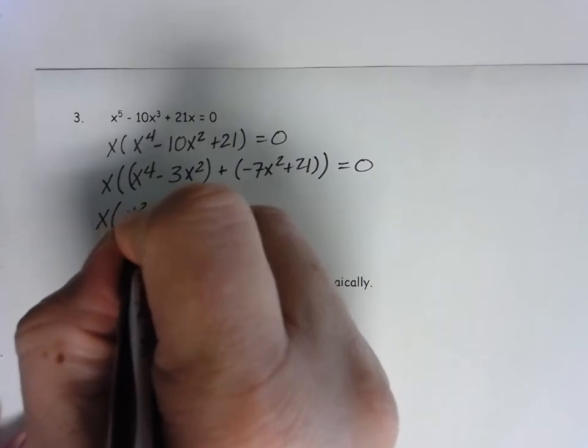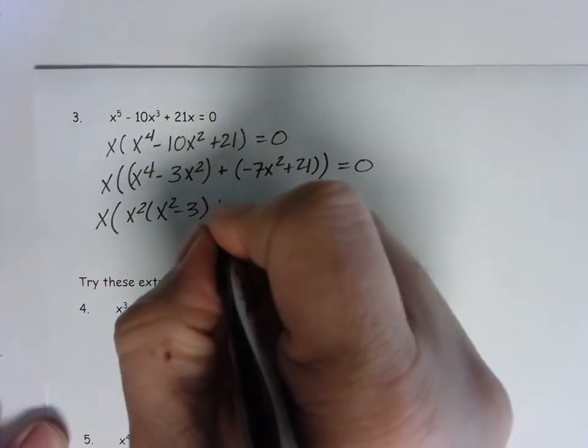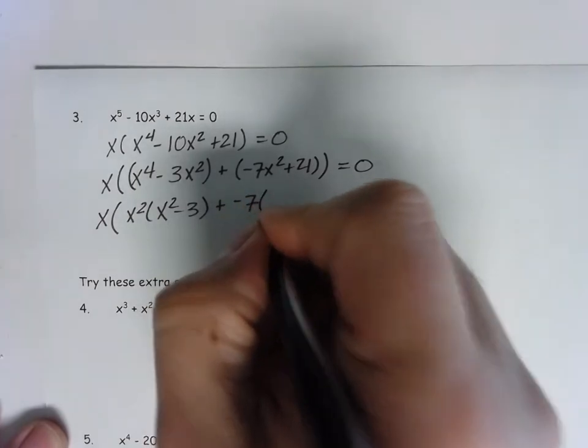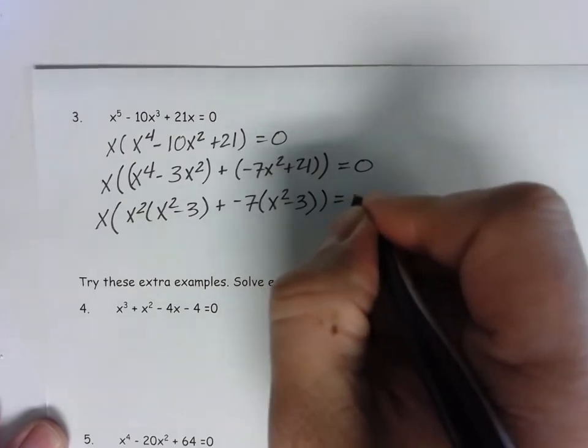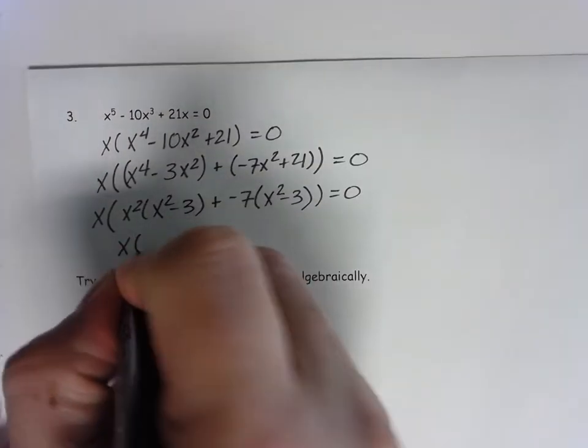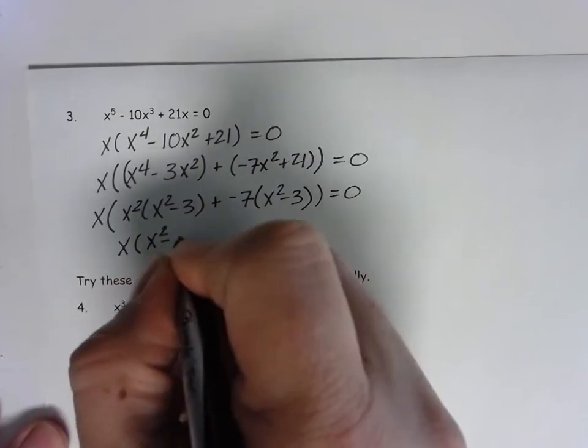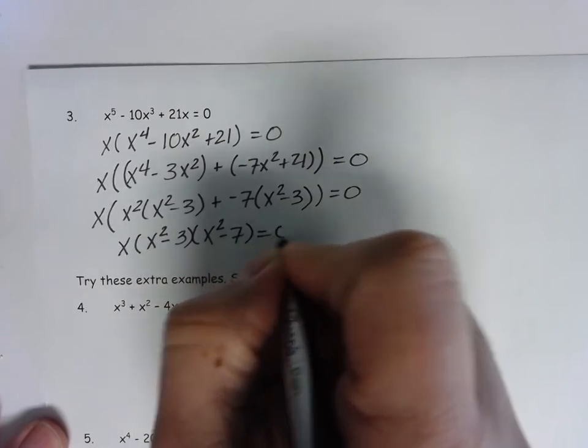This becomes the x squared coming out, x squared minus 3 remain plus negative 7 coming out, x squared minus 3 remain. And then I put x. This is x squared minus 3, x squared minus 7 all equal to 0.